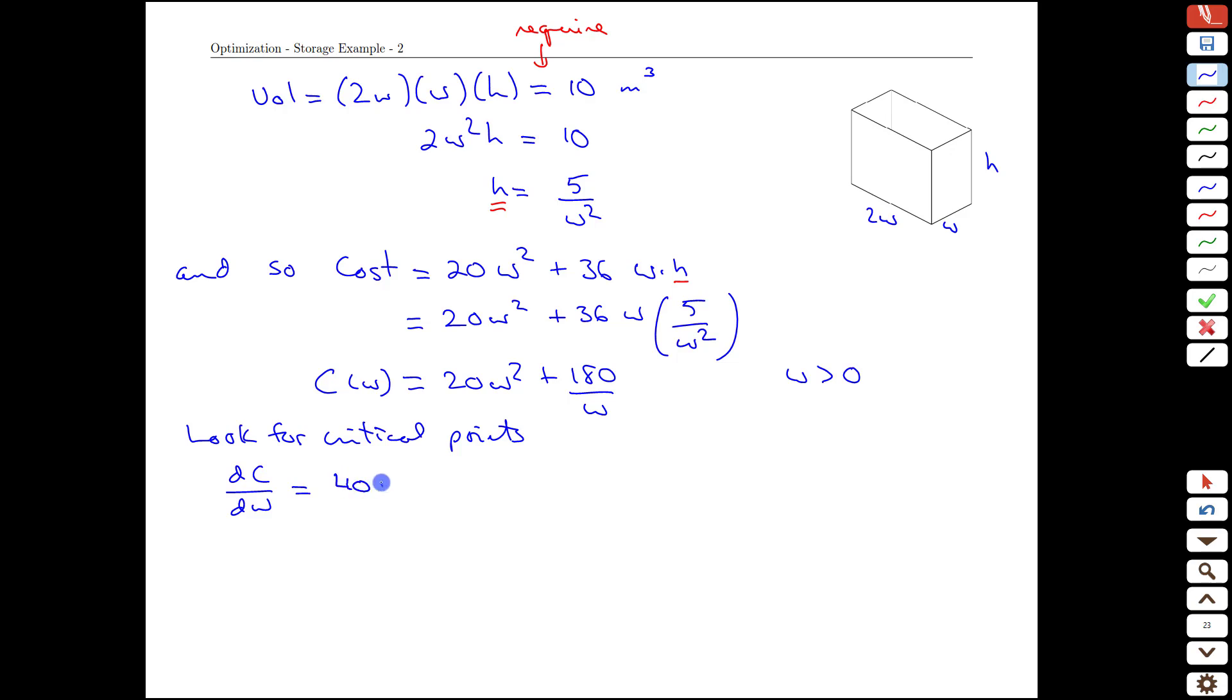Notice the w is where they are. We're going to have 40w for the derivative of the first term. It helps to rewrite the second one, I think, because it makes it into an explicit power if we rewrite this w in the denominator as w to the negative 1.